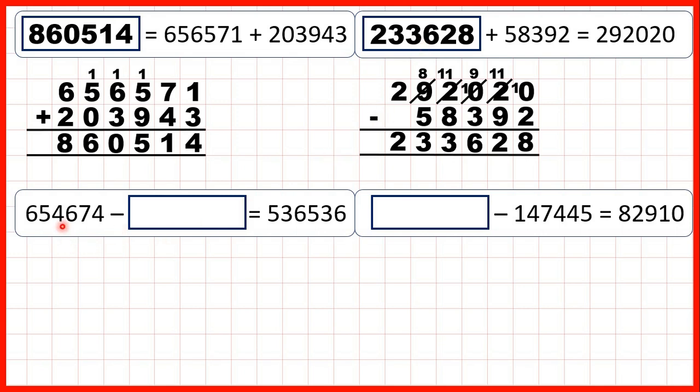Now, 654,674 minus something equals 536,536. So in this question, it's the second number of our subtraction that's missing, and when the second number is missing, we still use subtraction to find our missing number.